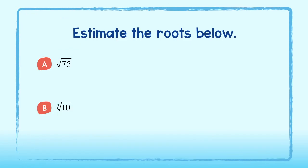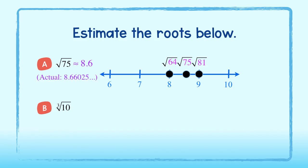Estimate the roots below. Be sure to jot down your work. When placing the square root of 75 on a number line, we see that it lies between 8 and 9. My estimate is 8.6. The actual value is 8.66025 and so on. Any estimate close to this number will do.